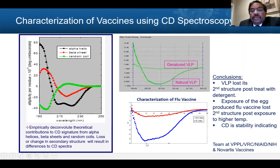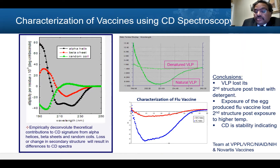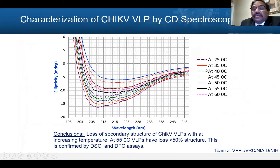This is the CD spectroscopy example for the flu vaccine, work done at Novartis. The vaccine kept at 4 degrees for 4 weeks maintained its secondary structure, but after 4 weeks at 50 degrees it lost its secondary structure. So CD spectroscopy is stability-indicating and can be used for characterizing the protein and for stability determination. For the chikungunya vaccine, the protein was heated from 25 to 60 degrees, and we see loss of signal with increasing temperature — by about 55 degrees the structure is gone. This technique can be used for forced degradation, real-time, and accelerated stability studies.